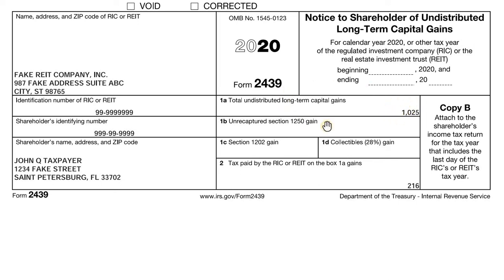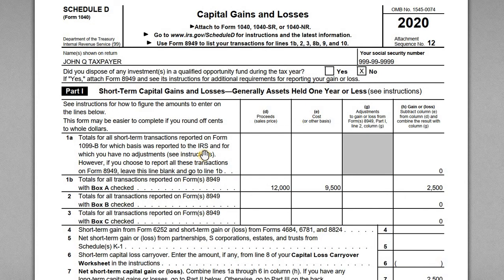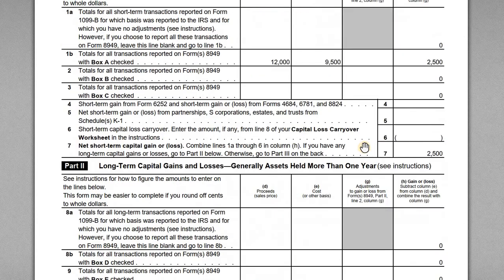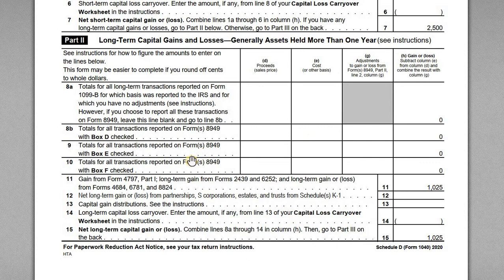John still has to report this income and gets a credit for the tax paid. On his 1040, we start with Schedule D — capital gains and losses. Scrolling down to line 11, this is where you report long-term capital gain distributions or undistributed gain distributions from Form 2439, along with a few other forms that apply to this line. In our case we have a 2439, so there's John's $1,025.